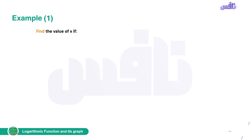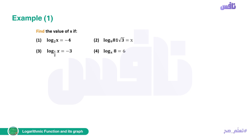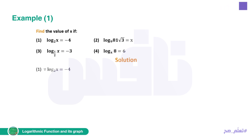Example 1, find the value of x. Number 1: log base 2 of x equals negative 4. We convert to exponential form: x equals 2 to the power of negative 4. Therefore x equals 1 over 2 to the 4th, which equals 1/16.